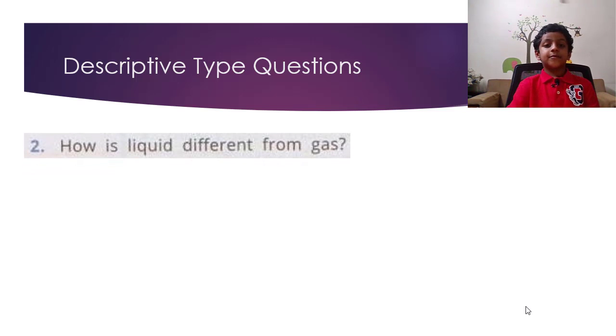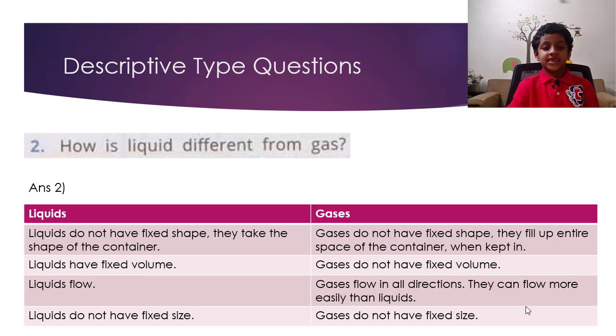How is liquid different from gas? Answer: Liquids do not have fixed shape, they take the shape of the container. Gases do not have fixed shape, they fill up the entire space of the container when kept in. Liquids have a fixed volume. Gases do not have a fixed volume.